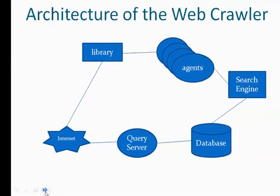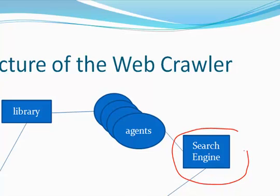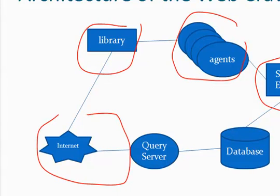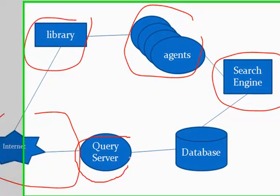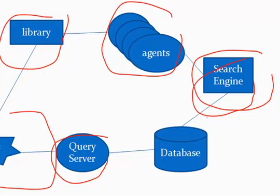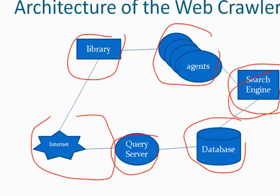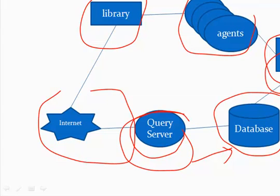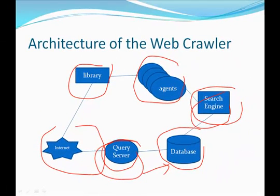Architecture of the webcrawler. The search engine tries to build up an index with the help of agents. Agents use the library to search the internet. In query processing mode, the search engine builds the database and the query server queries the database. There are two different modes of operation: the first is while the index is being created, and the second is when the index is already in the database and a user has typed a query, which is retrieved by matching against the indexes.